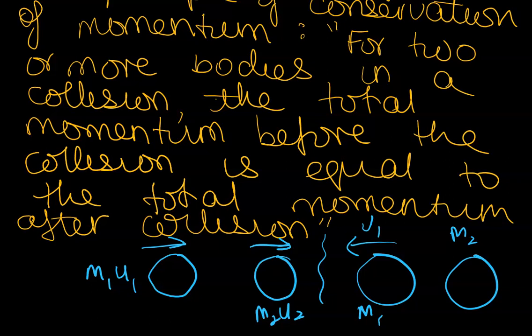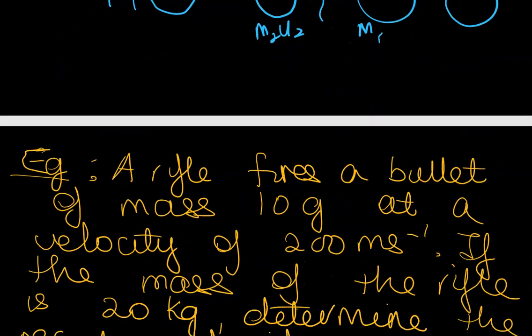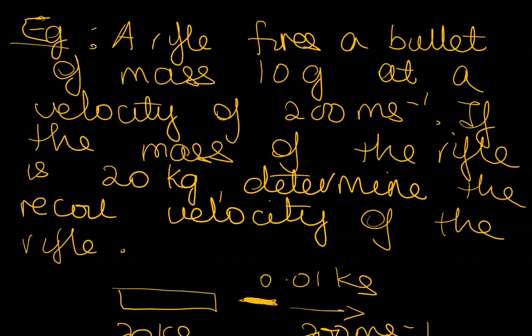In today's video, I want to focus on a rifle and how it behaves. One of the common things that students don't understand is that a rifle ejecting a bullet is an application of the principle of conservation of momentum. So if you have a rifle and a rifle fires a bullet of mass 10 grams at a velocity of 200 meters per second, if the mass of the rifle is 20 kilograms, how can we determine the recoil velocity?